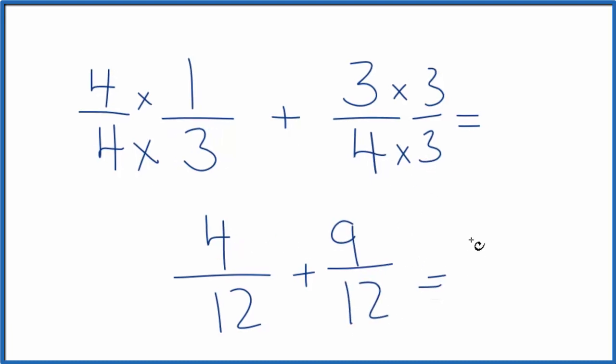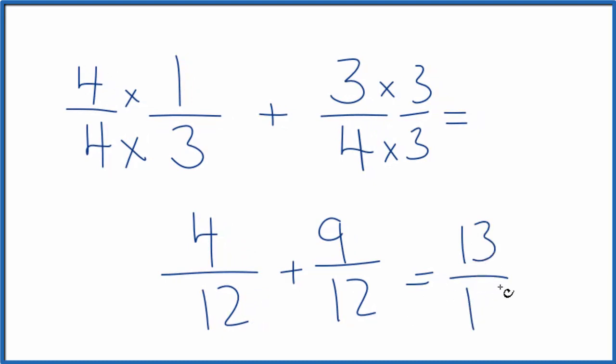So we add 4 plus 9, we get 13, and we bring the 12 across. 1/3 plus 3/4 equals 13 over 12.